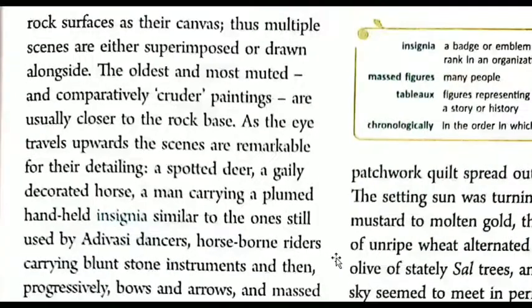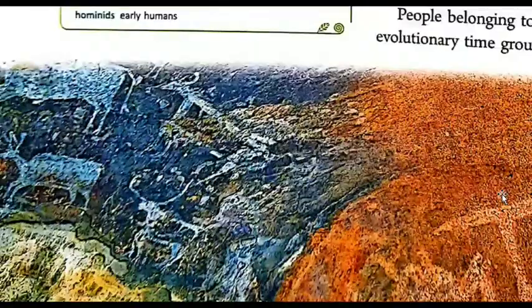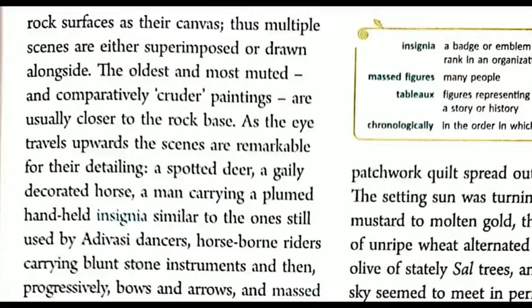People belonging to different evolutionary time groups used the same rock surface as their canvas. The painting was not completed by one particular generation — it continued along with the development of generations. Multiple scenes are either superimposed or drawn alongside each other. The oldest and most muted, completely cruder paintings are usually closer to the rock base, while later, more developed paintings were added on top.